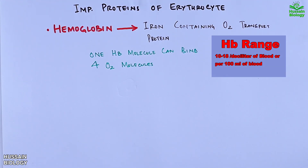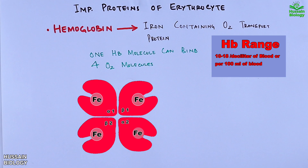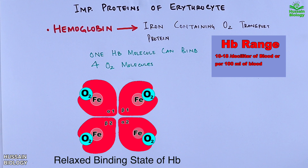Here in the diagram we can see the hemoglobin molecule — the tetrahedral structure with four globular protein subunits. The four oxygen molecules come in and bind to the hemoglobin molecule in this way, as shown in the animation.